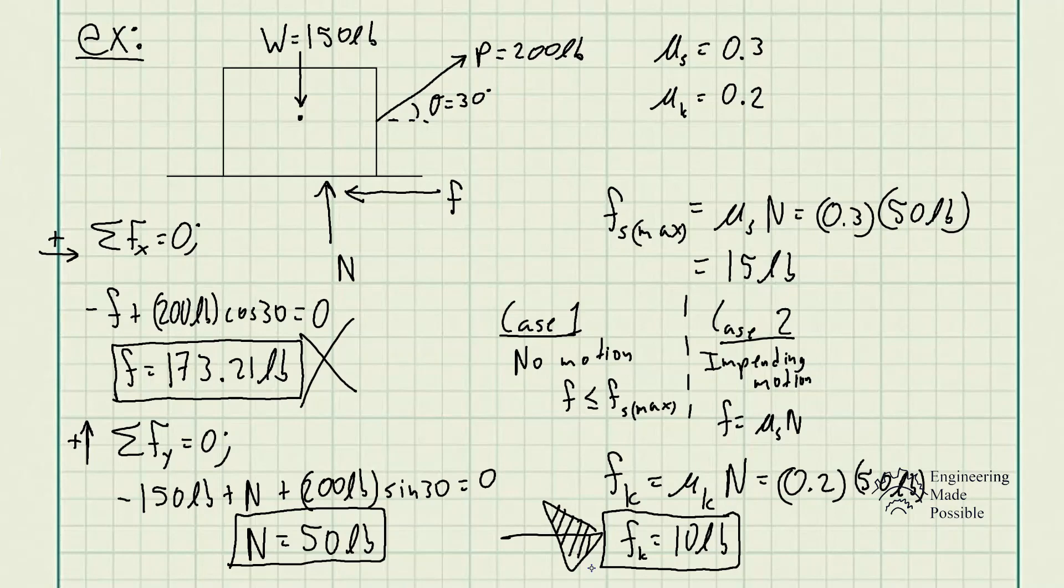Since we determined there was motion, the initial frictional force from the sum of forces along X was incorrect because it assumed the object was stationary, which it isn't. We had to use the kinetic frictional force equation. This is how you solve problems involving friction.